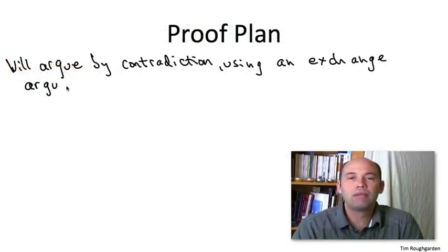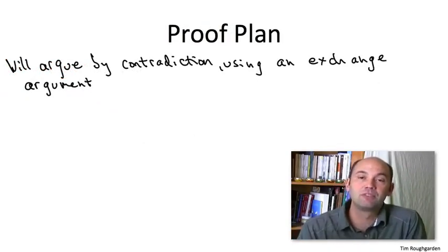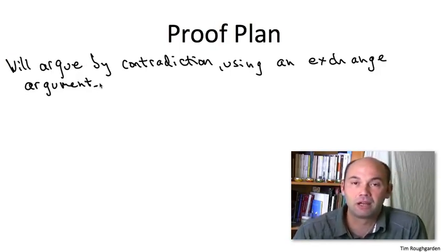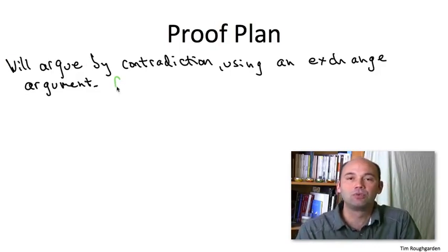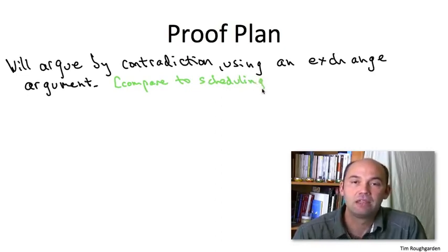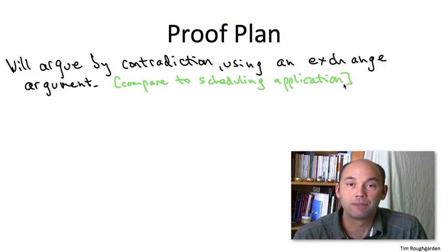At a high level, the plan will be not that different than the correctness of our greedy scheduling algorithm for minimizing the weighted sum of completion times. That is, we're going to use an exchange argument embedded in a proof by contradiction. And the type of contradiction will be of the same form. We'll start with an optimal solution. Suppose it doesn't have the property that we want it to have, and then we do an exchange to make it even better, contradicting the assumption that this solution is optimal.